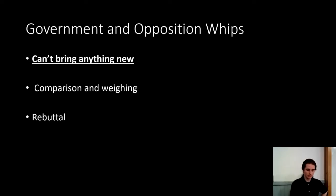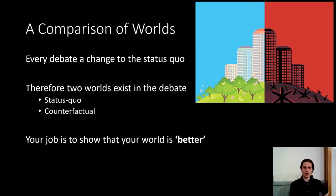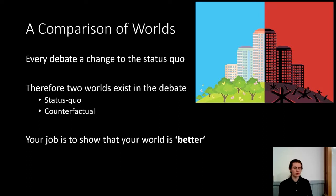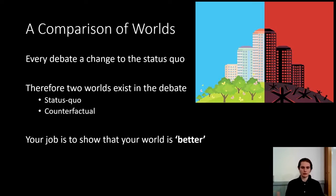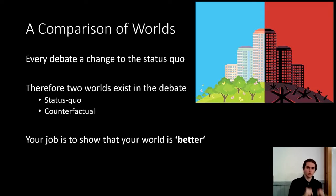And then you reach the end of the debate. So, what are these arguments? In debating, you are always comparing two worlds. Every debate has a change to the status quo, so if your motion is 'this house would do something', you are comparing the world in which that thing is done versus the current world where it's not done. You've got two worlds: your status quo and your counterfactual — the world where something has changed. You need to tell me why the world on your side of the debate has the better world.